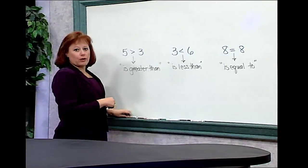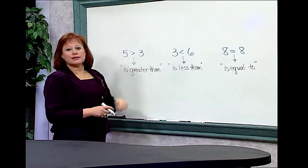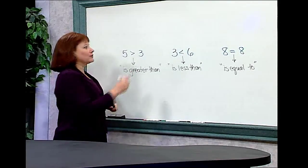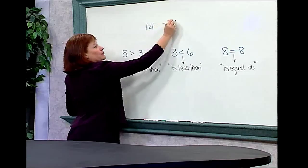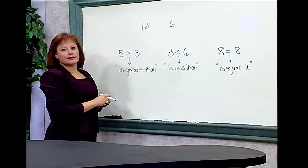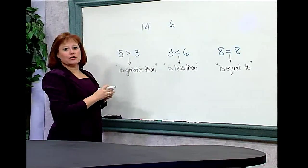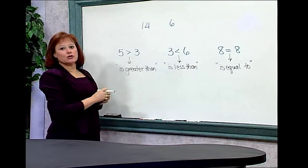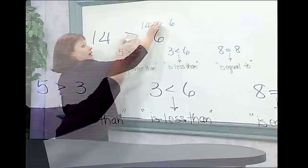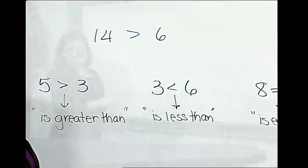Whenever you're comparing two numbers, what you want to be able to do is decide which of these signs is the most appropriate one to use. For example, if I was comparing the numbers 14 and 6, I know that 14 is bigger than 6, so I would want to use the is greater than symbol. And I would write 14 is greater than 6.